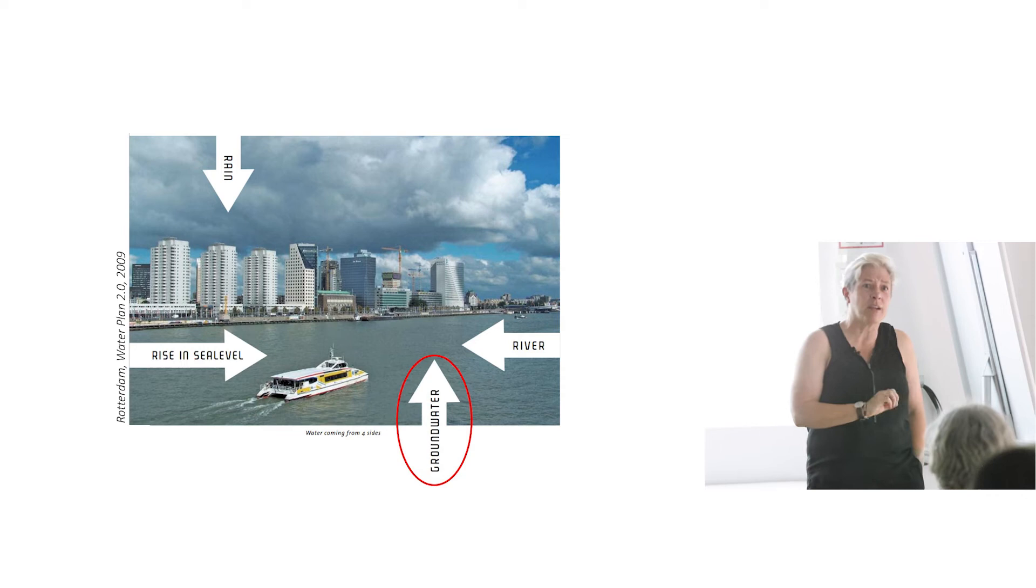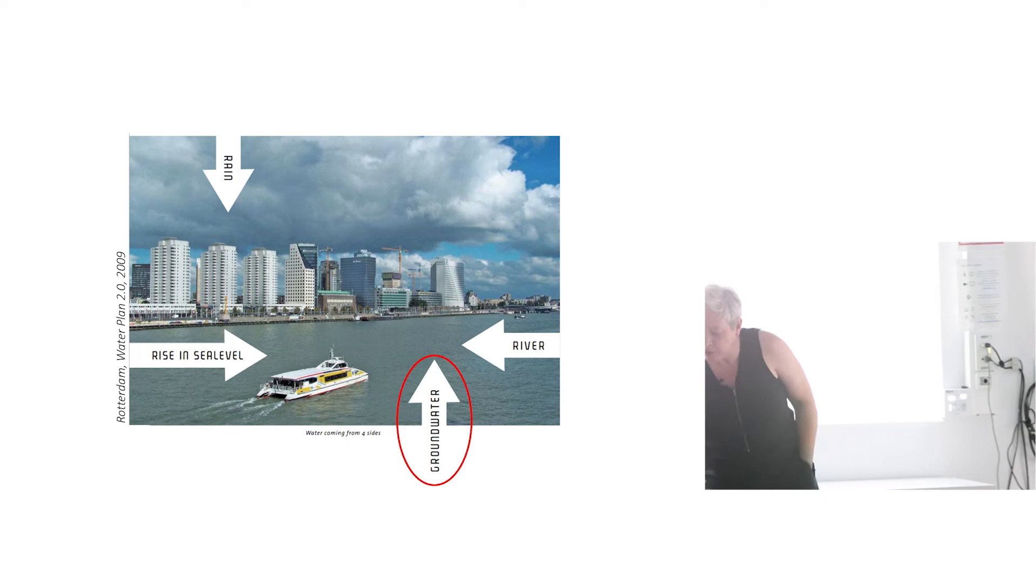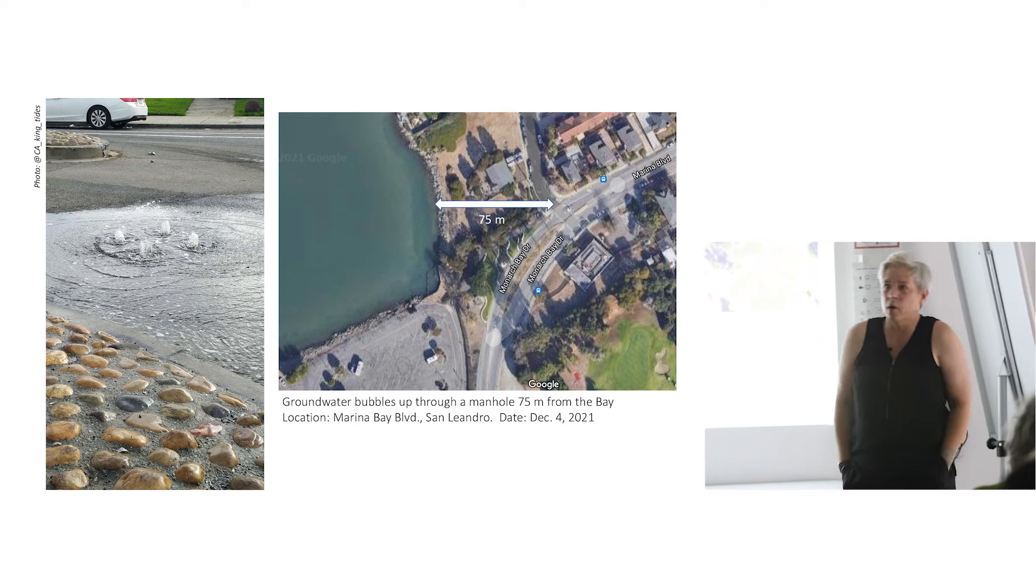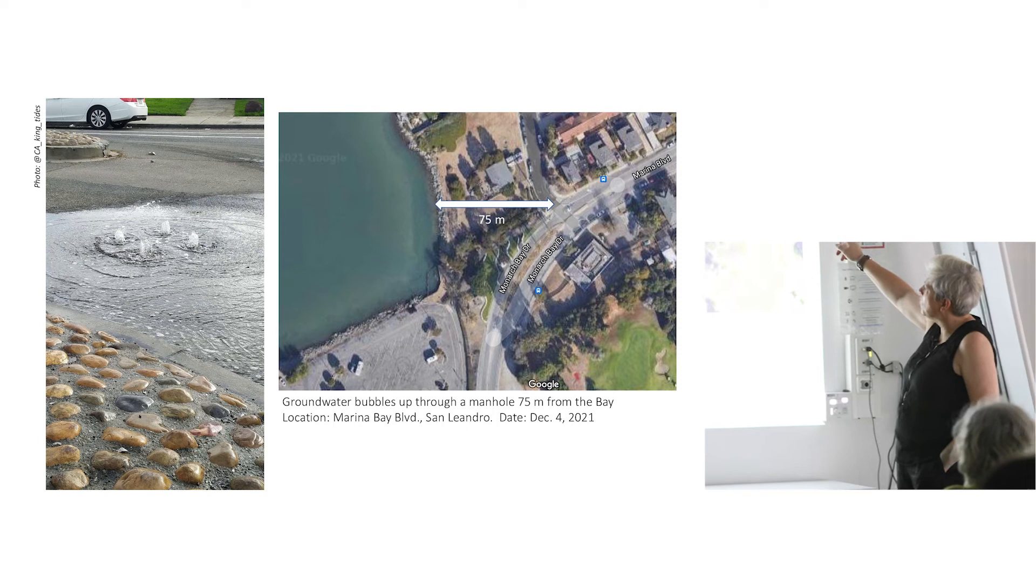The Dutch have so much management of their groundwater that I think of it as like a domesticated groundwater. In the US, we don't even know where our groundwater is. We don't know how deep it is. We don't know what's in it. It's kind of like a wild groundwater. No one makes maps of it because it's not considered a resource. It's typically polluted.